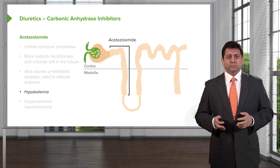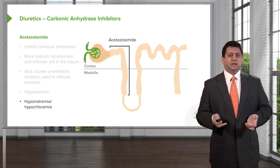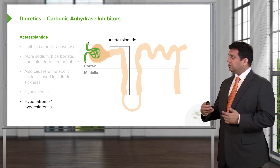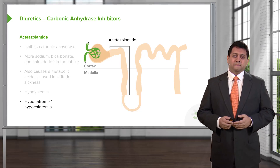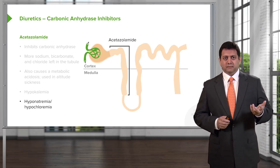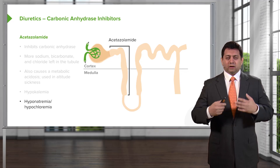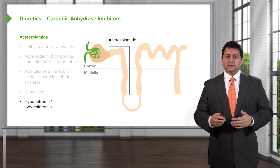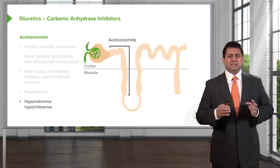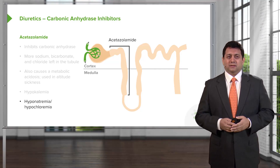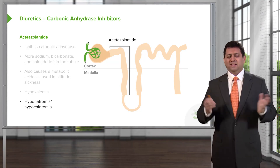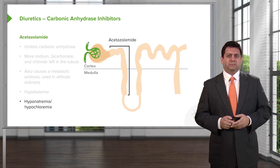Acetazolamide can cause low potassium or hypokalemia, low sodium or hyponatremia, and low chloride levels or hypochloridemia. In terms of using it for altitude sickness, it works by causing a metabolic acidosis, which automatically protects you from the hypocapnia and respiratory alkalosis that you would develop at high altitude. I personally have used it when climbing mountains in Peru. It's a very good drug for altitude sickness, but not so much for hypertension.